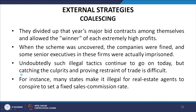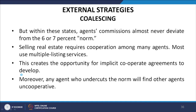Undoubtedly, such illegal tactics continue today, but catching culprits and proving restraints of trade is difficult. For instance, many states make it illegal for real estate agents to conspire to set a fixed sales commission rate, but within these states agents' commissions almost never deviate from the 6 or 7 percent norm. Selling real estate requires cooperation among many agents, and most use multiple listing services — this creates the opportunity for implicit cooperative agreements to develop.